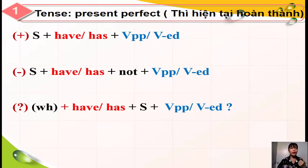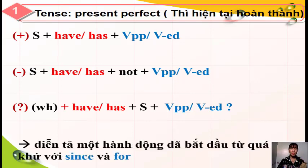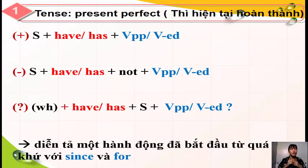Ở bài số 9 chúng ta đã được làm quen rồi. Thì hiện tại hoàn thành dùng để diễn tả một hành động đã bắt đầu từ quá khứ, với 'since' và 'for'. Trong đó 'since' cộng cho một mốc thời gian, và 'for' cộng cho một khoảng thời gian. Mốc thời gian tức là khi nhìn vào đó, mình biết nó là một điểm thời gian cụ thể. Ví dụ: since last night, since last week.